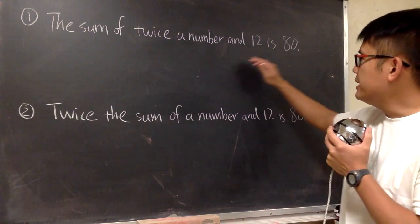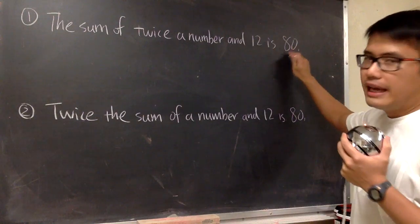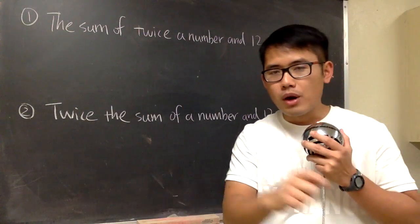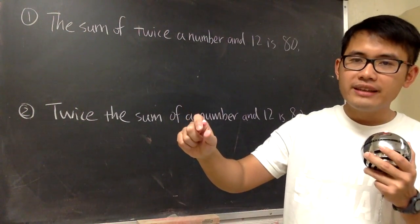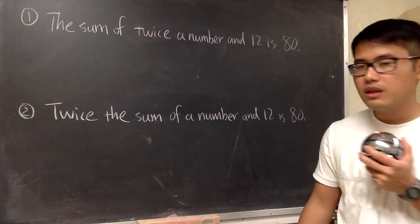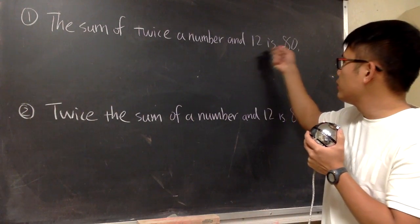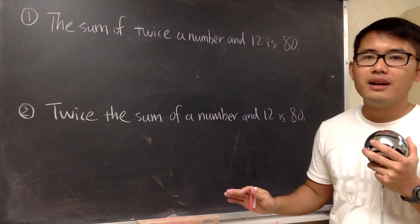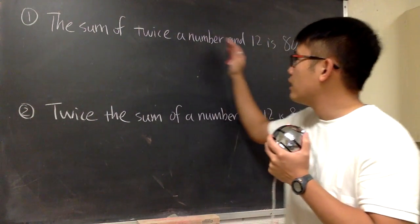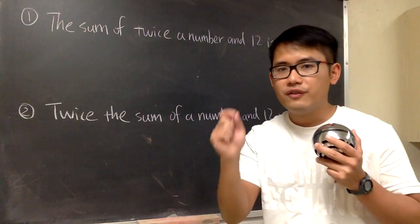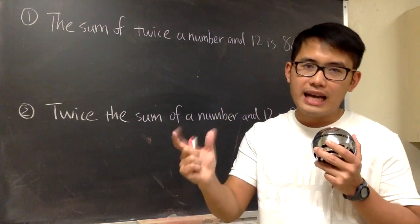So right here, let me show you. For the first one, the easiest part is this. It is 80. When we are reading the word problems, we are going to translate that into an equation along the way. That's equal to 80 at the end. That's the easiest part. And for this part, in fact, we should read it from the middle out, inside out.